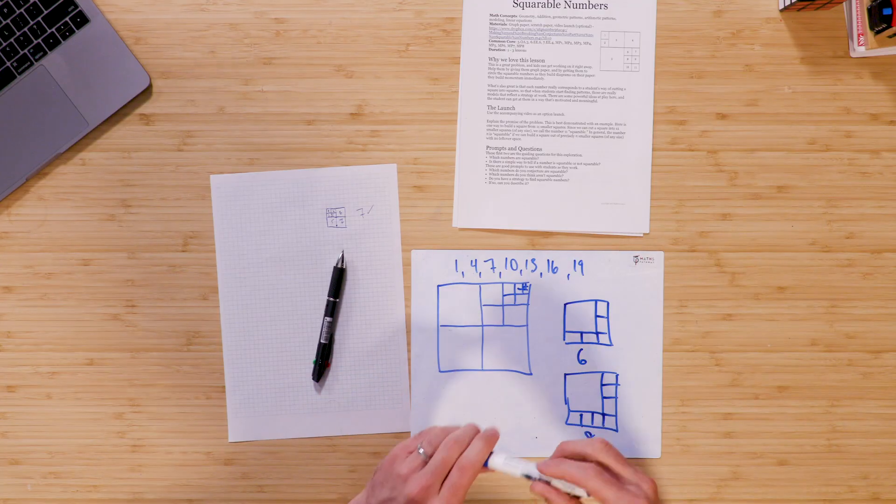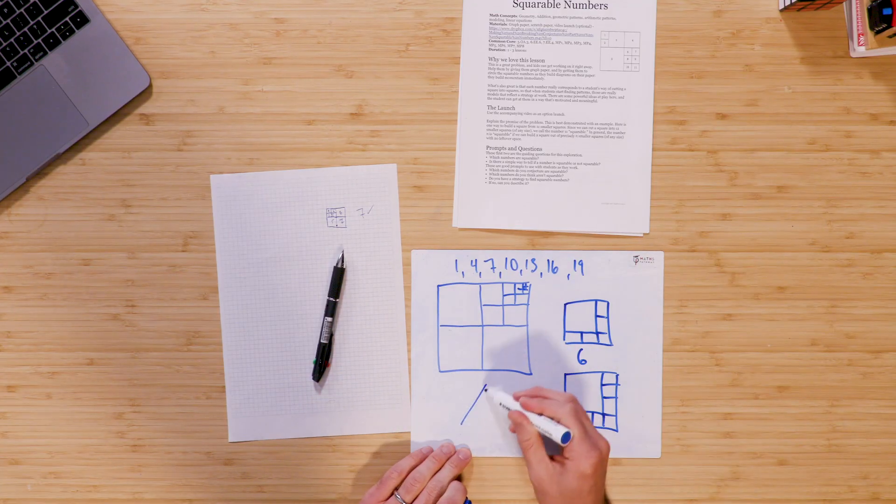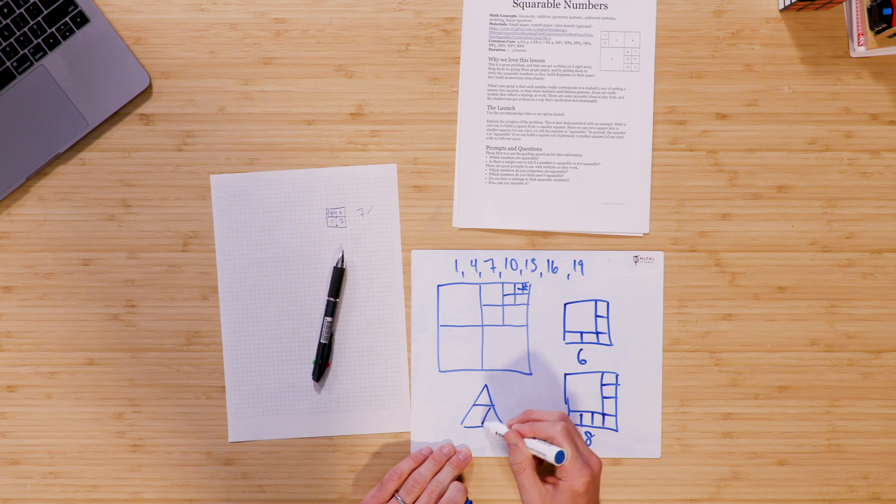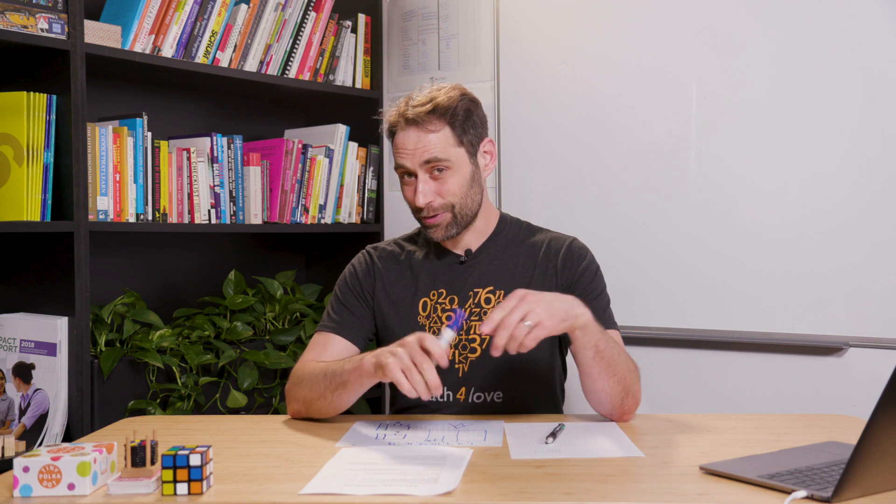This lesson may be worth spending more than one day on, and if some students finish early, a nice extension is to try triangulable numbers — that is, take an equilateral triangle and break it up into smaller equilateral triangles. Which numbers are triangulable? It ends up being not just an analogous problem to this one; it actually ends up having the exact same answer, which is pretty interesting in its own right.